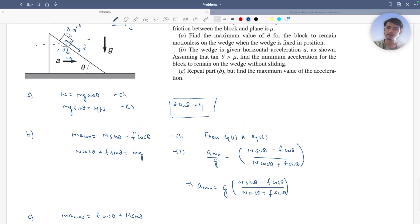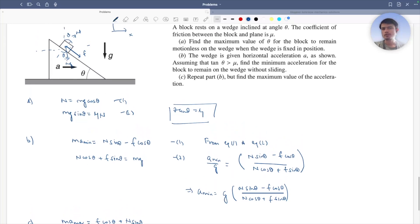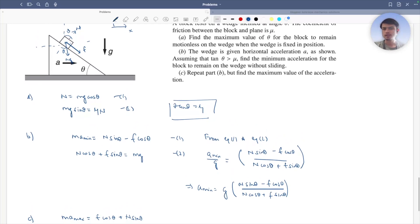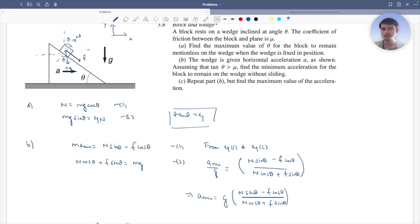And for the limiting case, let's balance in y direction also. So I have my n cos theta equals to mg plus f sin theta.